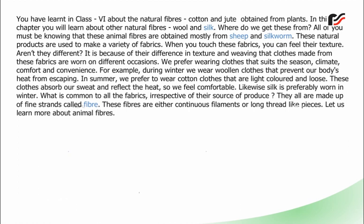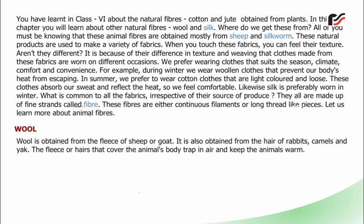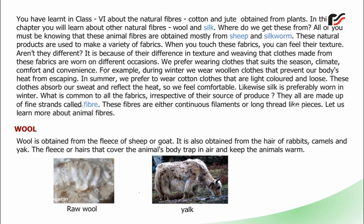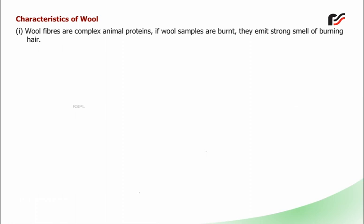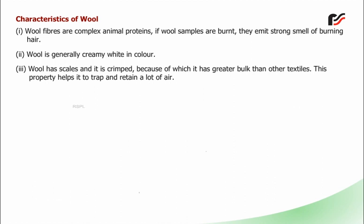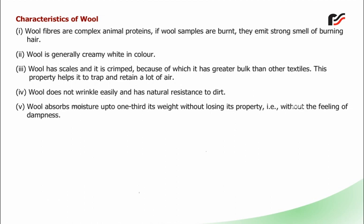Wool is obtained from the fleece of sheep or goat. It is also obtained from the hair of rabbits, camels and yak. The fleece or hairs that cover the animal's body trap in air and keep the animals warm. Wool fibres are complex animal proteins. If wool samples are burnt, they emit a strong smell of burning hair. Wool is generally creamy white in colour. Wool has scales and it is crimped, because of which it has greater bulk than other textiles. This property helps it to trap and retain a lot of air. Wool does not wrinkle easily and has natural resistance to dirt. Wool absorbs moisture up to one-third its weight without losing its property, i.e. without the feeling of dampness. It is resistant to most organic acids, but strong alkalis can damage it.